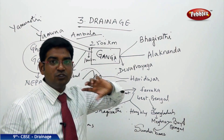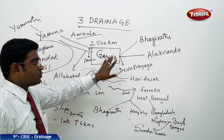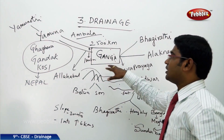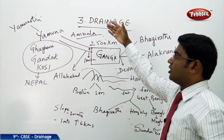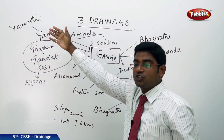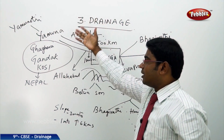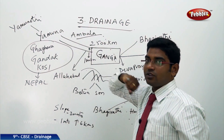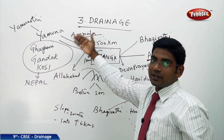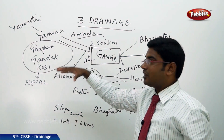Along with this, another set of tributaries also join River Ganga. Yamuna has its origin from the Yamunotri Glacier. We also have Nepal-Himalayan belt tributaries joining River Ganga: Ghaghra, Gandak, and Kosi. These all originate in the Nepal-Himalayan region.